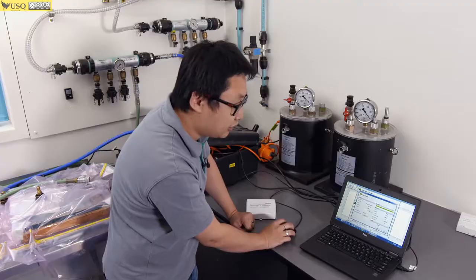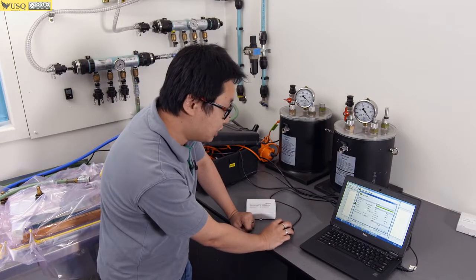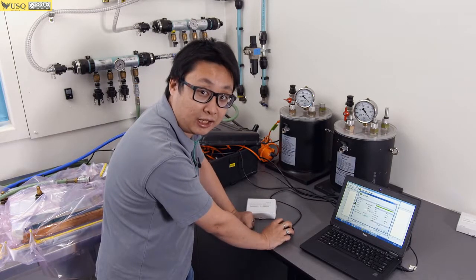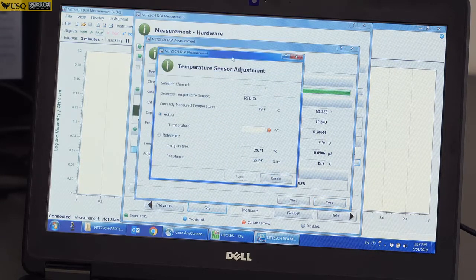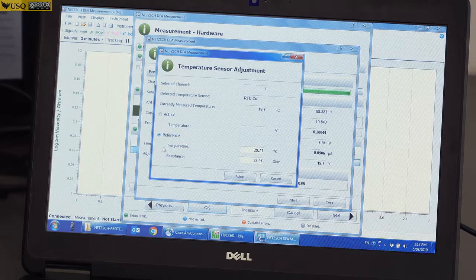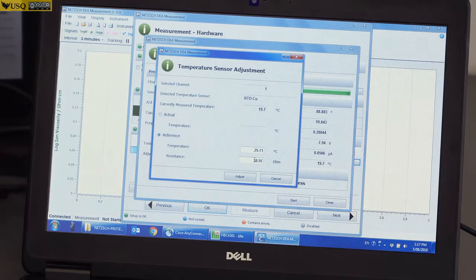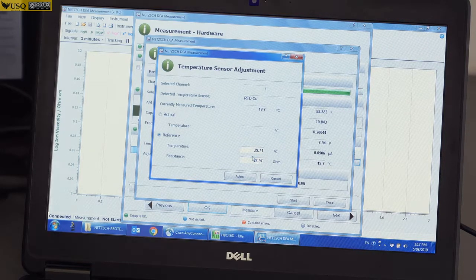Just in case, if the temperature is not showing, you need to go to Adjust Temperature Sensor on the left-hand side. Press Adjust. You can see there's a reference here which is the temperature and also the resistance.